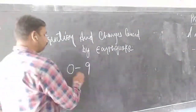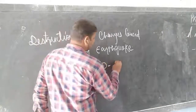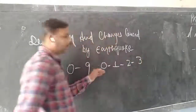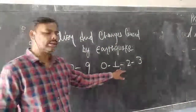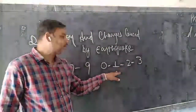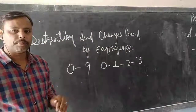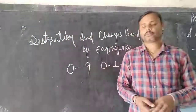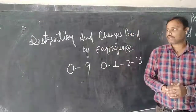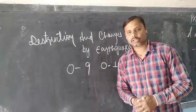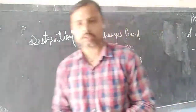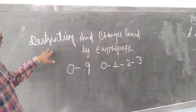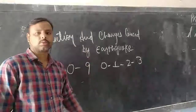From 0 to 1, 1 to 2, 2 to 3, there is an increment. The moment the Richter scale increases, there is a 10-fold increase in the magnitude of the earthquake. That is about the Richter scale. Today we are here to discuss the destructions and changes which are caused by earthquakes.